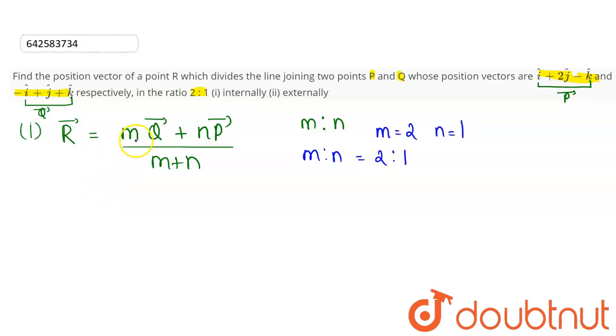So substituting these values, R vector equals M into that is 2 into Q vector, that is minus I cap plus J cap plus K cap, plus N, N is 1. So P vector is I cap plus 2J cap minus K cap, whole divided by M plus N, which will be 3.